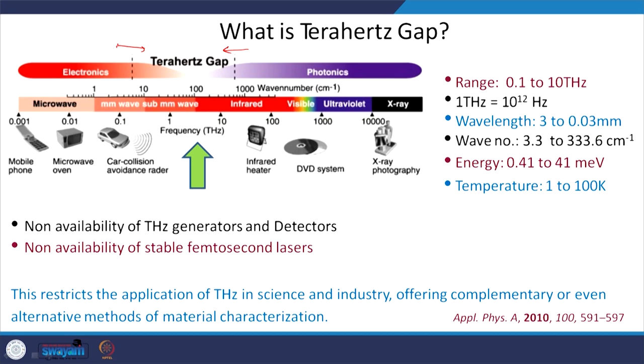Previously this range was not available, which restricted its use in science and industry, but nowadays it has become more and more relevant. One key reason is that terahertz waves can penetrate through media which are opaque to other parts of the electromagnetic spectrum. For example, a plastic bag, wood, or a briefcase can become transparent to some extent to these waves.